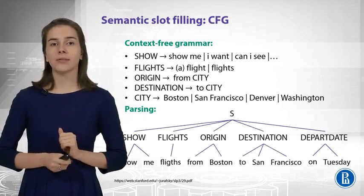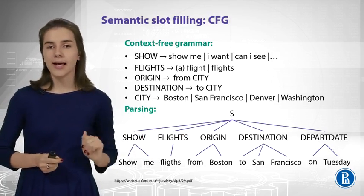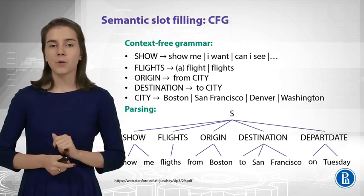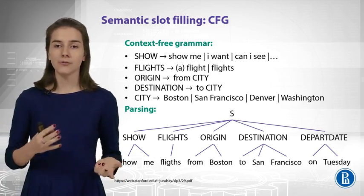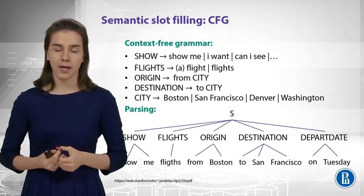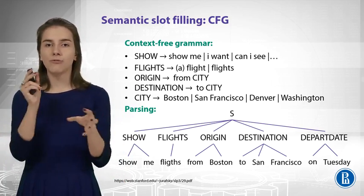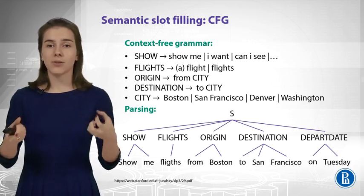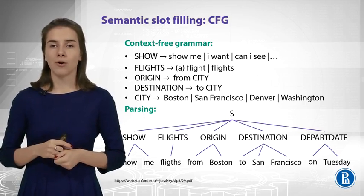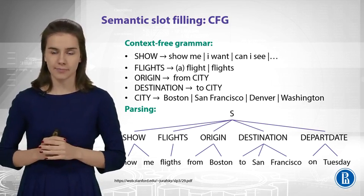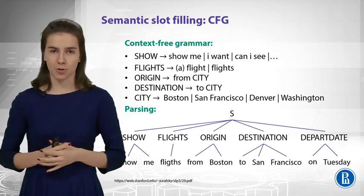The task is called semantic slot filling. You can see the query at the bottom of the slide, which says: 'show me flights from Boston to San Francisco on Tuesday.' You have some sequence of words, and you want to find some slots — the slots would be destinations, departure, some date, and something like that. To fill those slots, you can use different approaches.